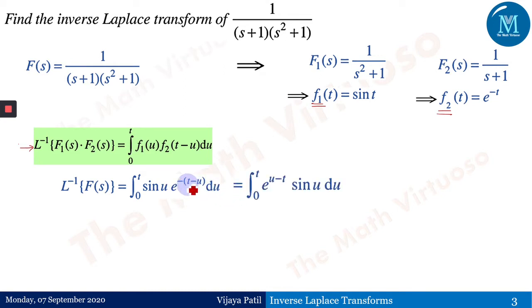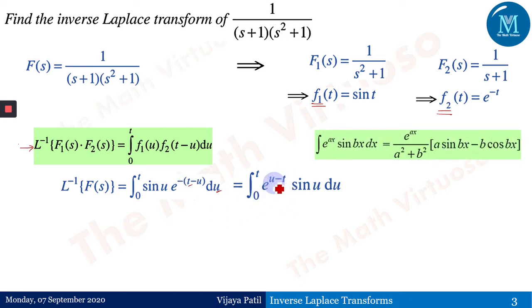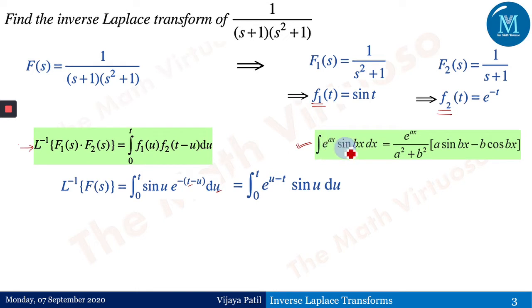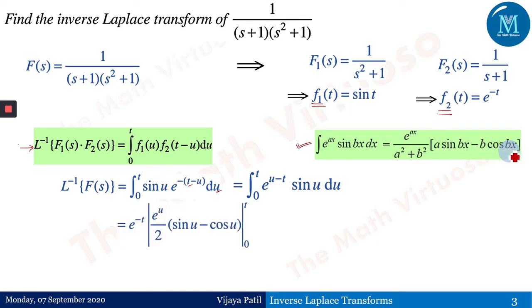Since u is the variable and t is the constant, solving this gives e^(u−t) sin(u) du. Now this matches the standard formula: ∫e^(ax) sin(bx) dx = e^(ax)/(a²+b²) · [a·sin(bx) − b·cos(bx)]. Since t is a constant, e^(−t) comes out of the integral.